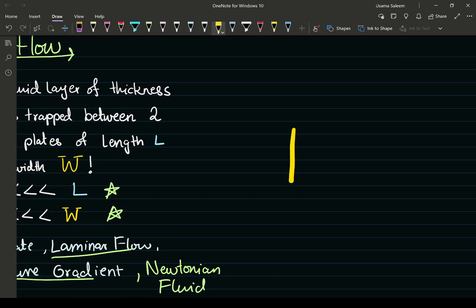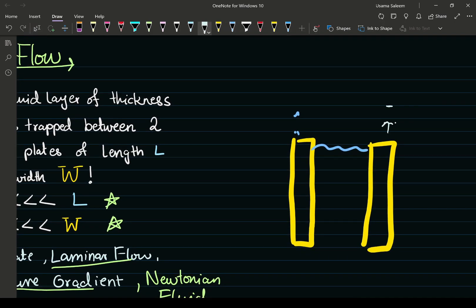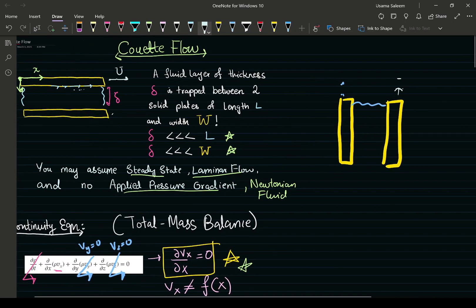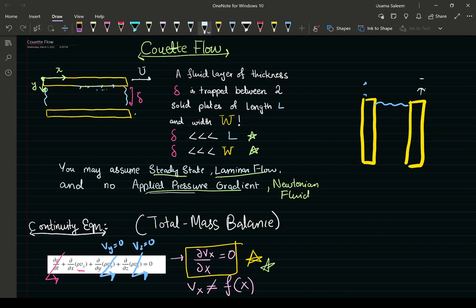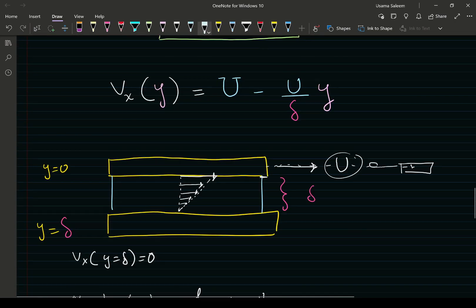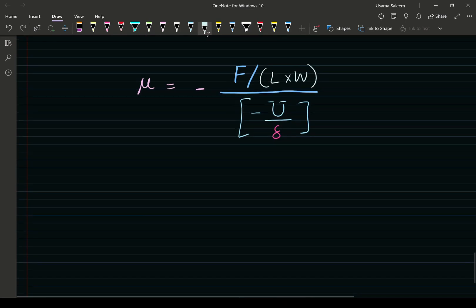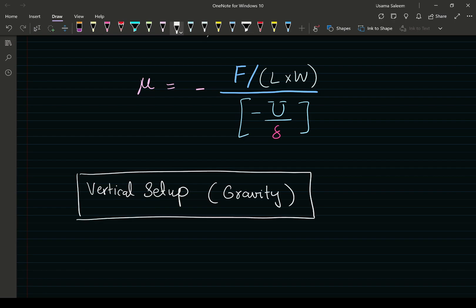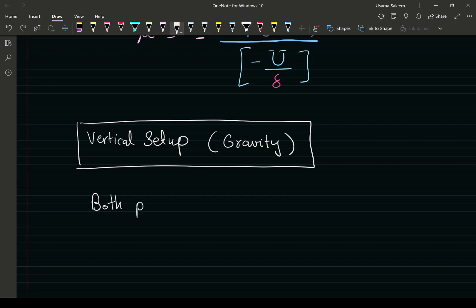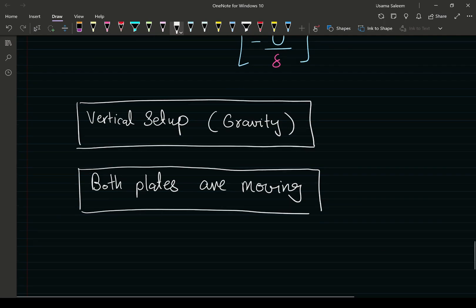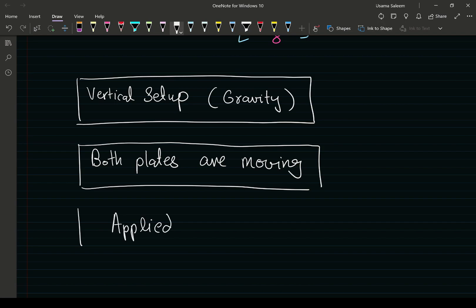Or if you want to make it even more complicated, here both plates were horizontal. What if both plates were vertical, so gravity is pulling the fluid down as one of the plates starts moving? Those are different variations of the Couette flow problem. Another variation is where you have a pressure gradient. In this one we had no pressure gradient. To summarize further complications: vertical setup where gravity is relevant, both plates moving with different boundary conditions, and applied pressure gradient affecting the velocity profile.